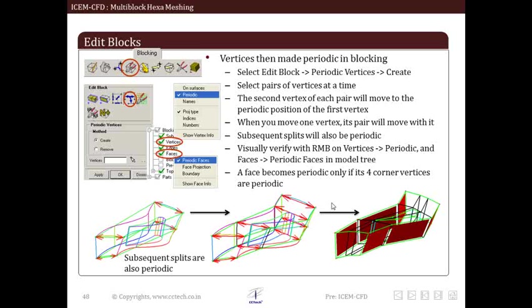When you move one vertex, its pair will move with it. Even subsequent splits will also be periodic. To cross check whether the periodic pair selection is correct or not, we can either enable periodic vertices by right clicking on vertices or enable periodic faces by right clicking on faces. One important thing to note is that a face becomes periodic only if its four corner vertices are periodic.